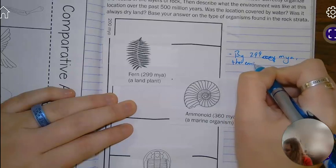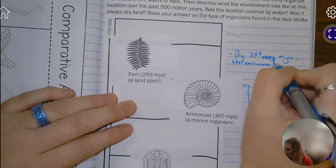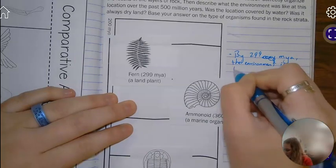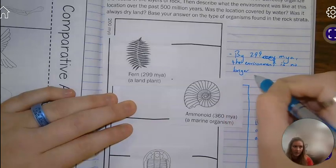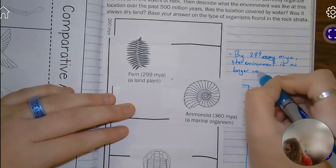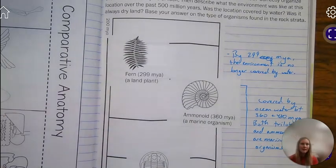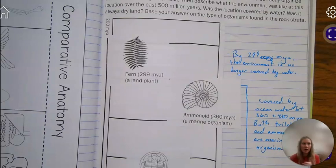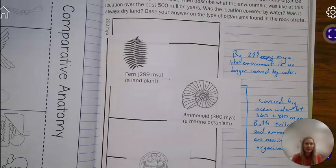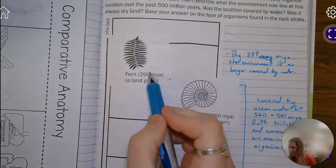The environment is no longer covered by water because ferns are land plants. And a fossil can only be found there if it was on dry land. So we must have had dry land by around 299 million years ago.